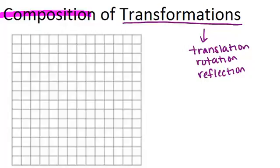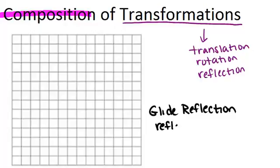The first has a special name called a glide reflection. A glide reflection is a composition of a reflection and a translation, and it could be in either order - you reflect and then translate, or translate and then reflect.